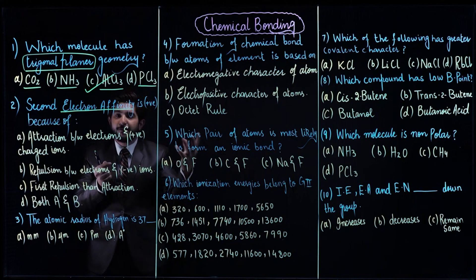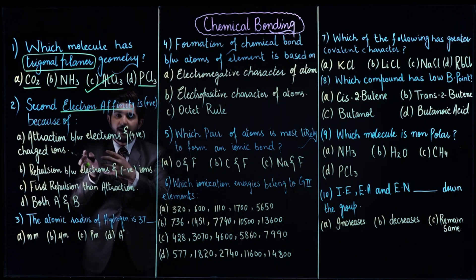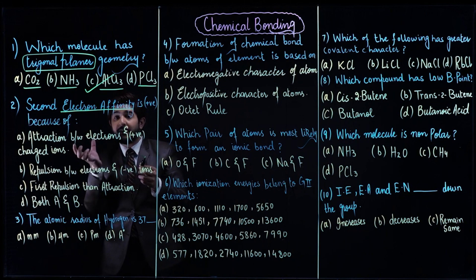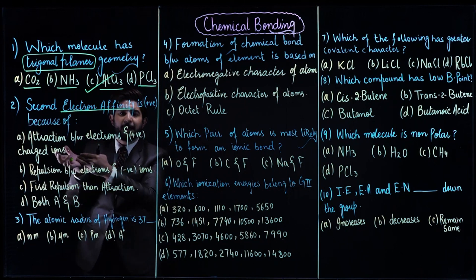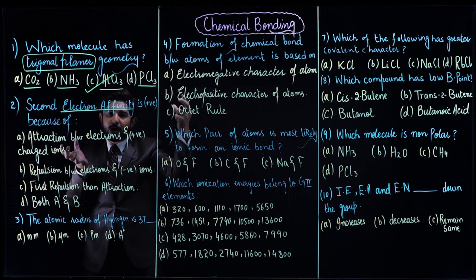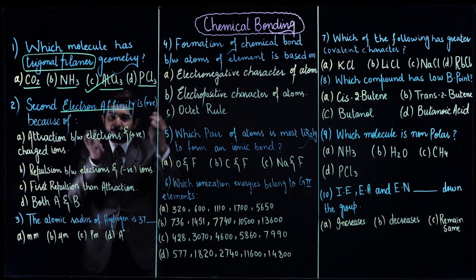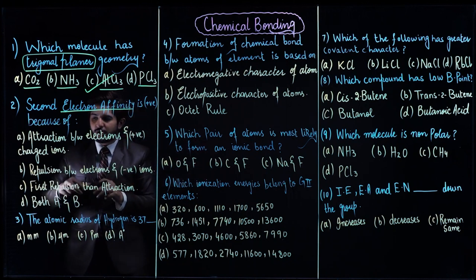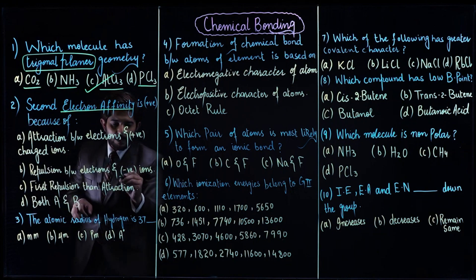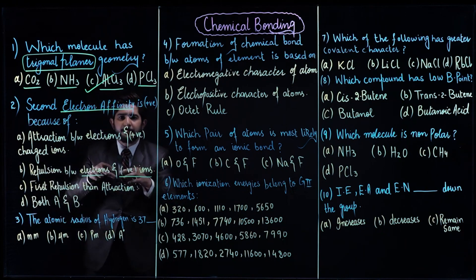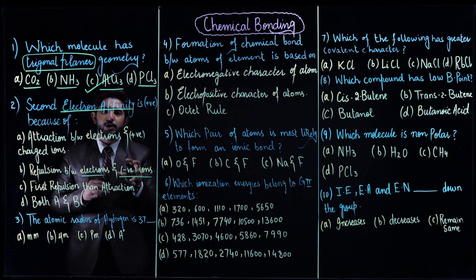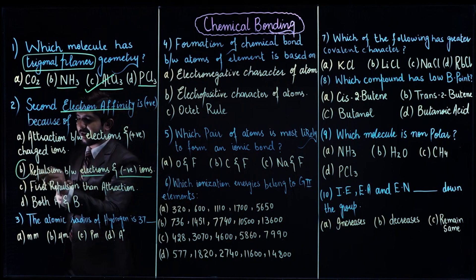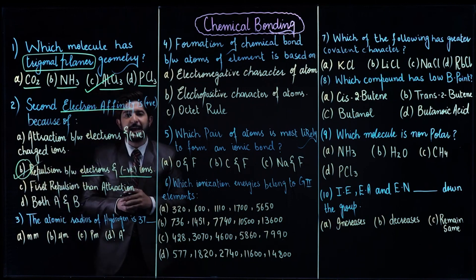First electron affinity means when the first electron is added to an atom. When the second electron is added, the atom is already having a negative charge on it — that is a uninegative ion. The uninegative ion and the incoming electron will repel each other. Due to this repulsion, we have to provide energy to the uninegative ion to accommodate another electron. So due to repulsion between the ion and electrons, second electron affinity is positive — it is endothermic.